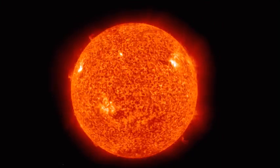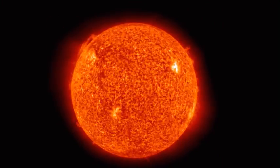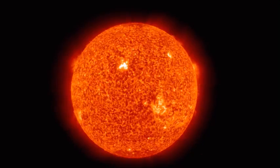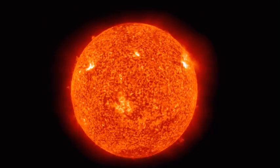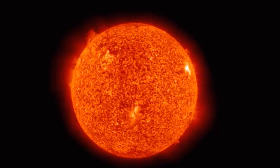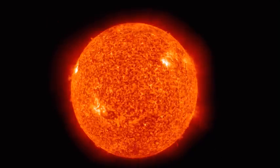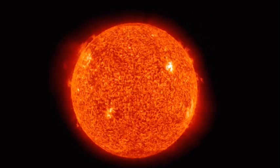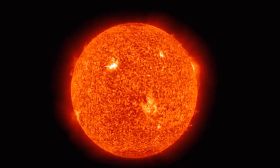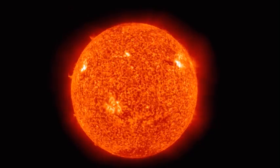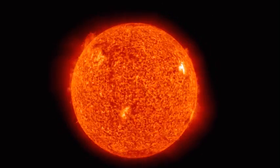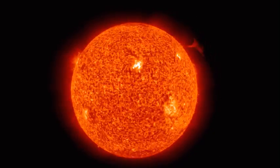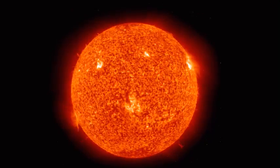As part of the VLA Nascent Disc and Multiplicity Survey, VANDAM for short, researchers call stars younger than half a million years old class 0 stars, mere babies in star terms. And stars a little older, between 500,000 years and a million years, class 1 stars. Our sun is a class 1 star.